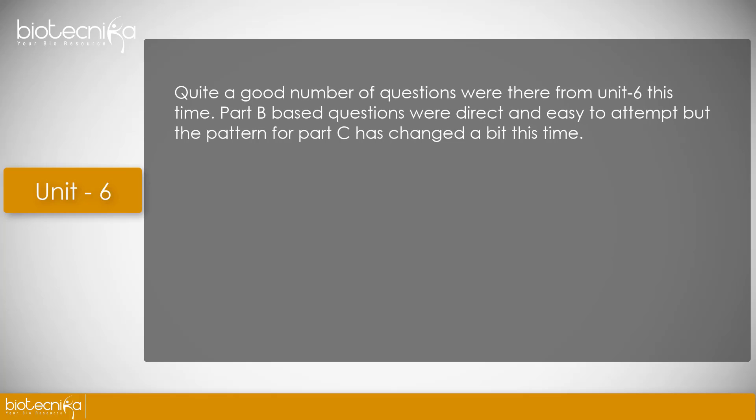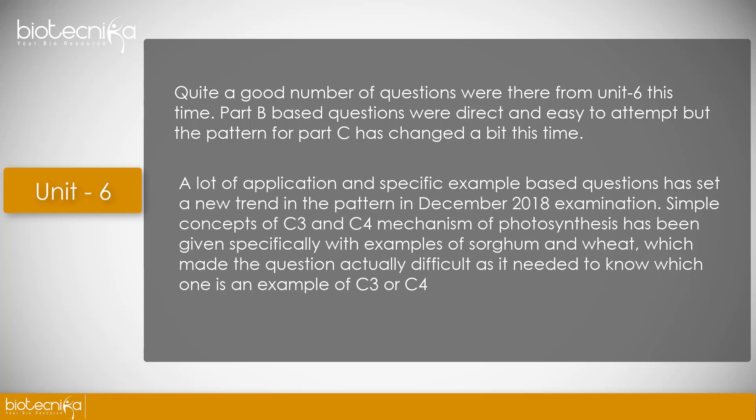Unit 6, quite a good number of questions were there from Unit 6 this time. Part B based questions were direct and easy to attempt, but the pattern for Part C has changed a bit this time. A lot of application and specific example based questions has set a new trend in the pattern in December 2018 examination. Simple concepts of C3 and C4 mechanism of photosynthesis has been given specifically with examples of sorghum and wheat, which made the question actually difficult as it needed to know which one is an example of C3 or C4.